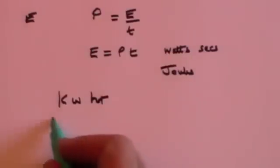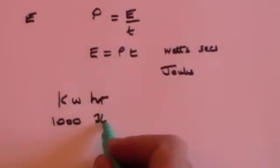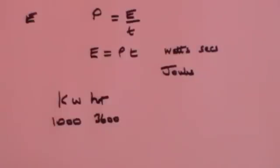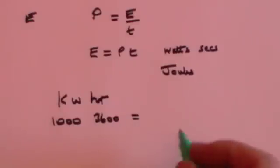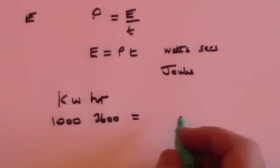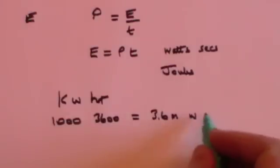A kilowatt, of course, is a thousand watts. An hour is three thousand six hundred seconds. So a kilowatt hour is equal to a thousand times three thousand six hundred which is three point six million watt seconds.